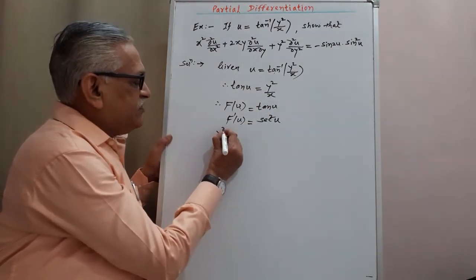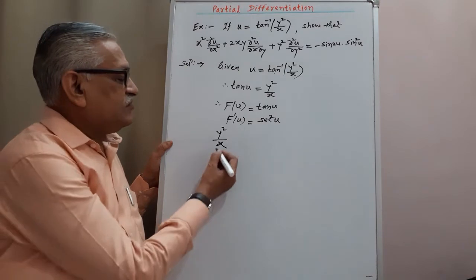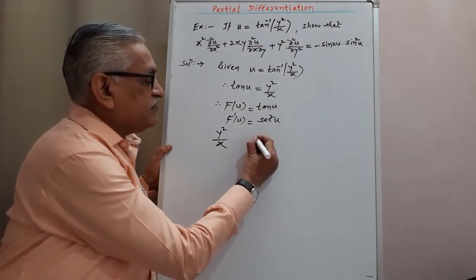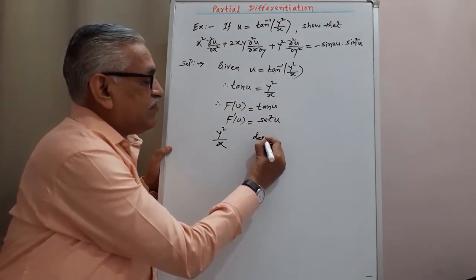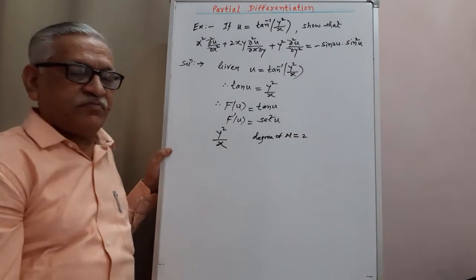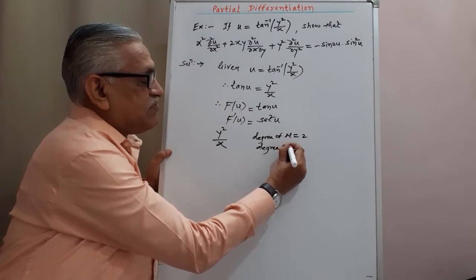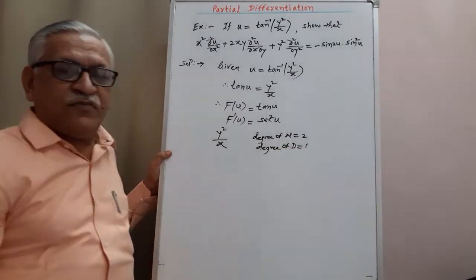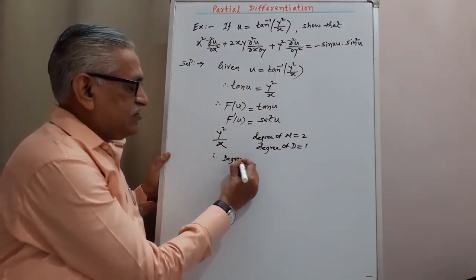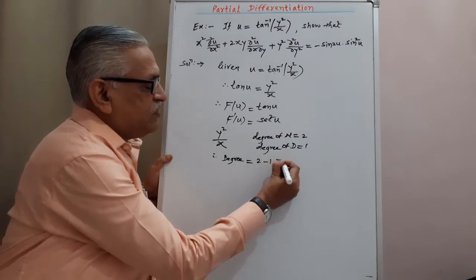To obtain the degree of the homogeneous function y²/x, we find it by two different ways. One: the degree of the numerator term is 2, and the degree of the denominator term is 1. Therefore, the degree of that function is degree of numerator minus degree of denominator, which is 2 minus 1, giving us 1.